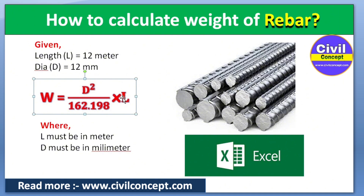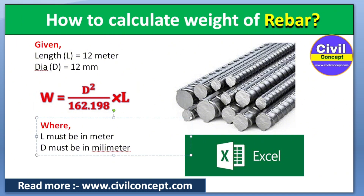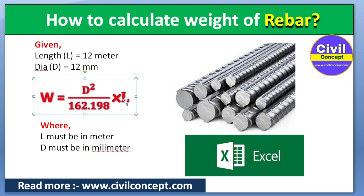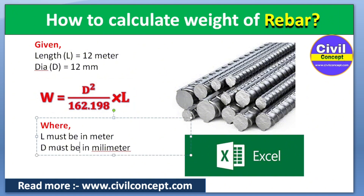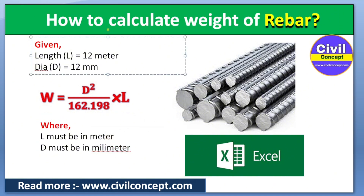You can only change the diameter D and the length L to get the weight. When we put the values into this formula, we get the weight in kg. The length must be in meters and the diameter must be in millimeters. So here we have 12 meters length and 12 mm diameter.